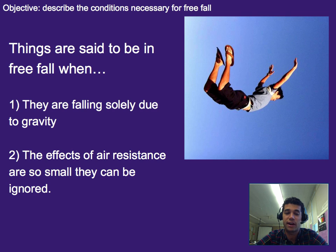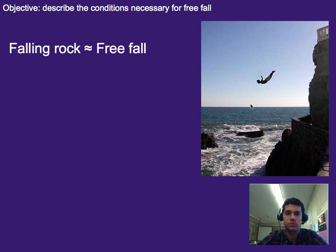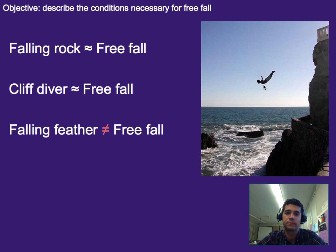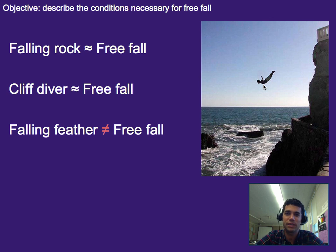There are times where the effect of air resistance is small enough that it doesn't really have an effect, and times where it does, such as with a feather. Some examples: a falling rock dropped from a small building is about free fall — not exactly, but close enough. A cliff diver is pretty close to free fall — again, not exactly, but close enough that we'll say it is. A falling feather is not free fall — clearly air is slowing it down. A crumpled piece of paper gets pulled down pretty fast but not as fast as you might think. So there are times where free fall is a good approximation and times where it isn't.